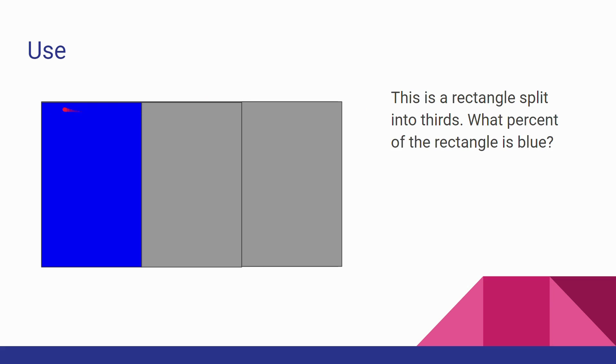So say that we have a rectangle, and it's split into thirds, so each of these portions are a third. If the entire rectangle is 100%, what percent of the rectangle is blue? Well, the answer is 33.333%, because one third of 100 is 0.33333333, and so 33.33 as a percent.